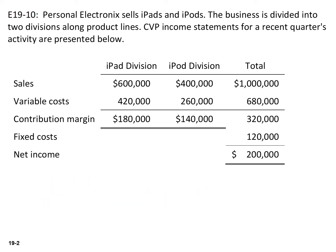The next thing we need to determine is the contribution margin ratio for each division. The contribution margin ratio for the iPad is 30% and the iPod is 35%. You're simply going to take the contribution margin and divide that by sales.